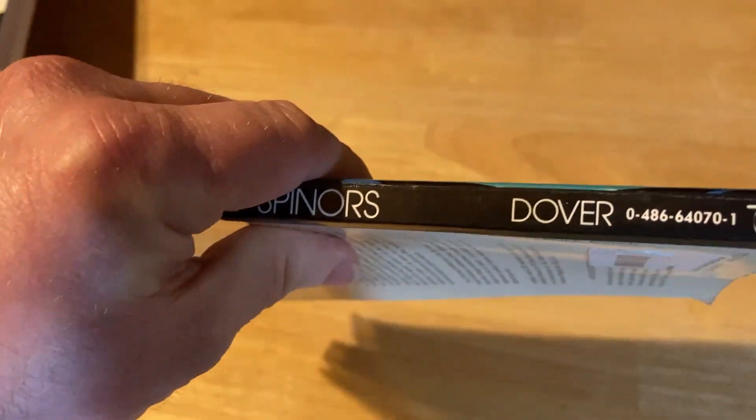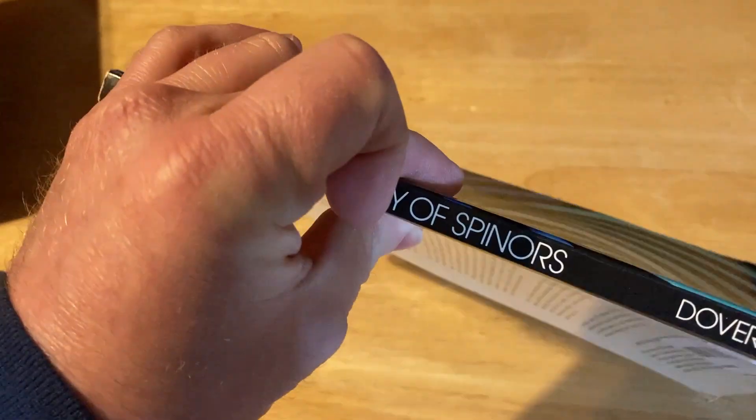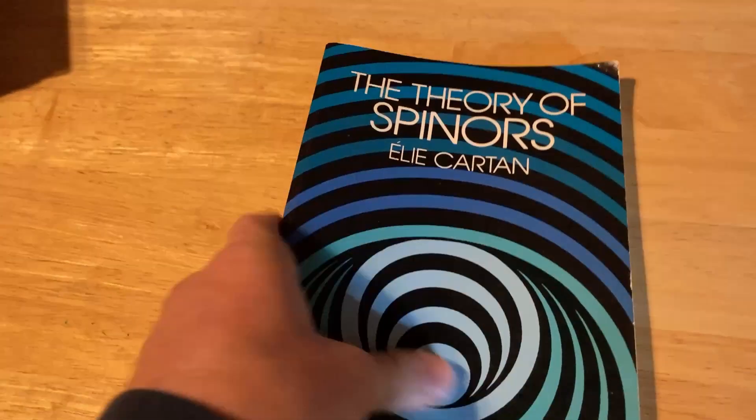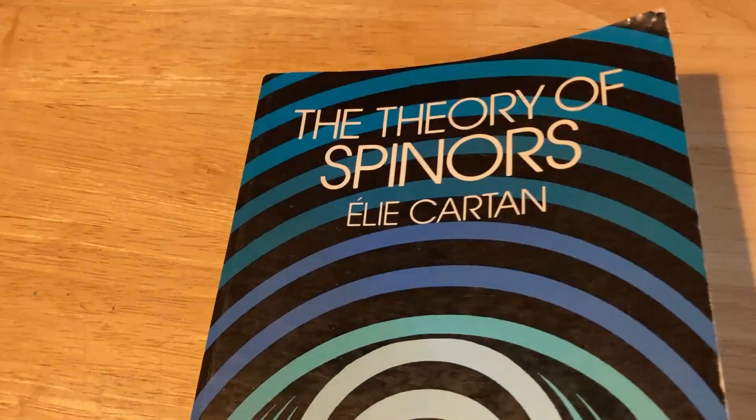This is a Dover book, so it's a reprint, which means that it's really affordable. Really advanced mathematics here. The Theory of Spinores.